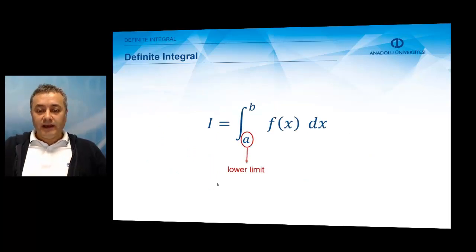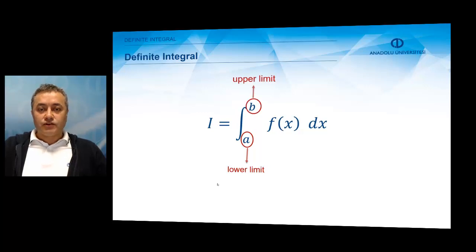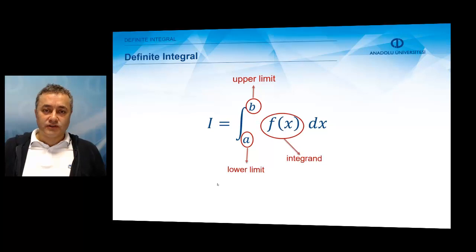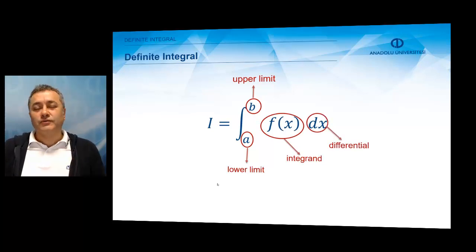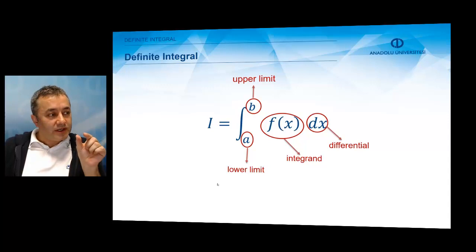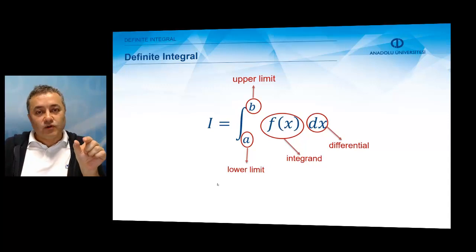Here, a is called the lower limit, b is called the upper limit, f of x is called the integrand, and dx is a differential, which corresponds to the very small length Δxᵢ.